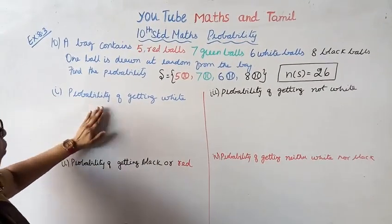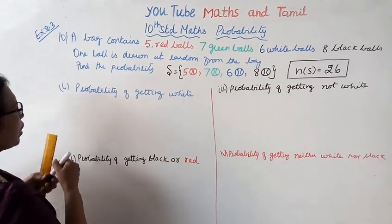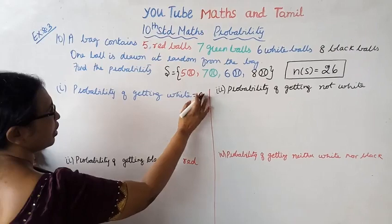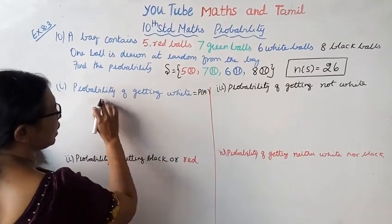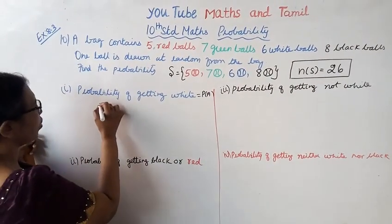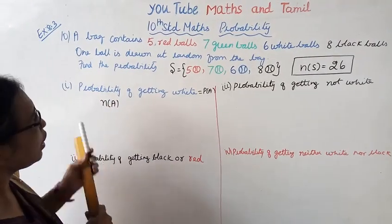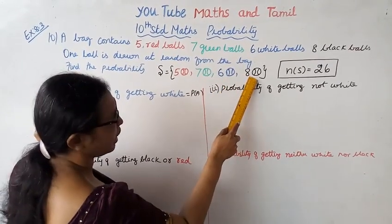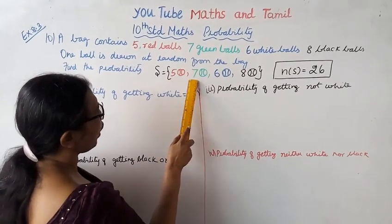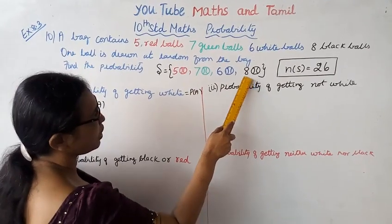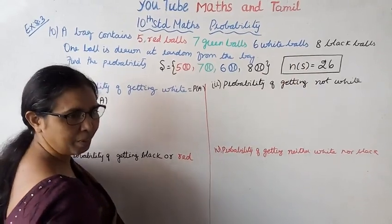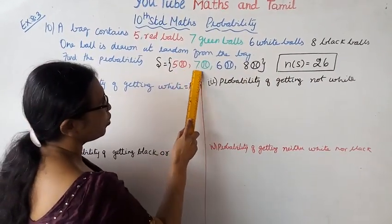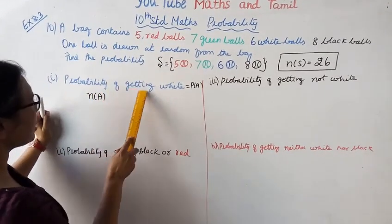First, probability of getting white. For sample space, we have 5 red balls, 7 green balls, 6 white balls, 8 black balls. Add them: 5 plus 7 equals 12, 12 plus 8 equals 20, 20 plus 6 equals 26. So n(S) equals 26. Probability of getting white...